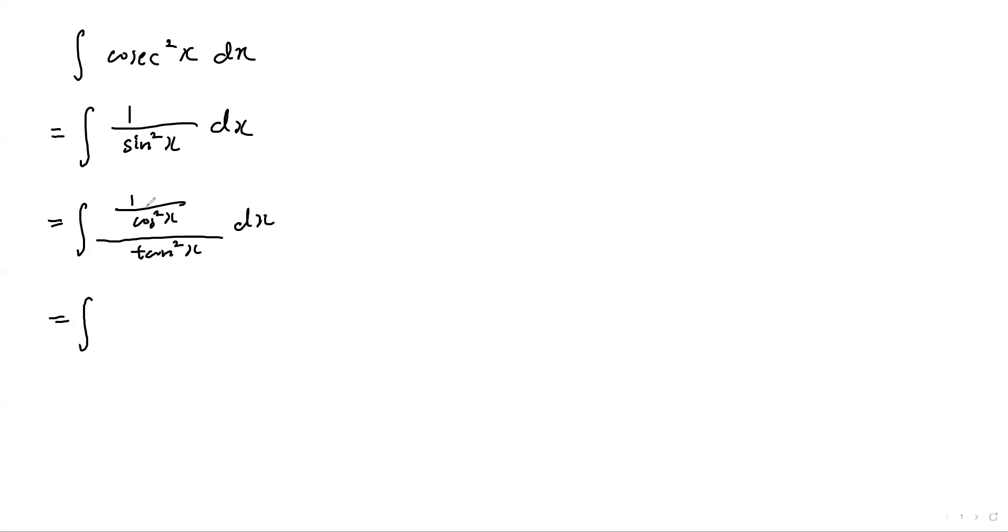At the top, 1 over cosine-square is secant-square. So what is next? I'm going to apply the substitution. I'm going to let u be tangent-x.